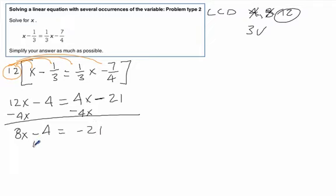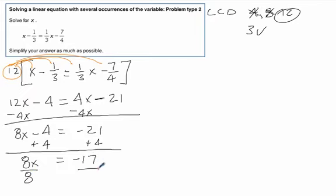That gives me an 8x minus 4 equals a negative 21. We want to add a 4 to both sides. That 8x is still here. Over here, we get a negative 17. Divide by 8. And our final answer is x equals negative 17 over 8.